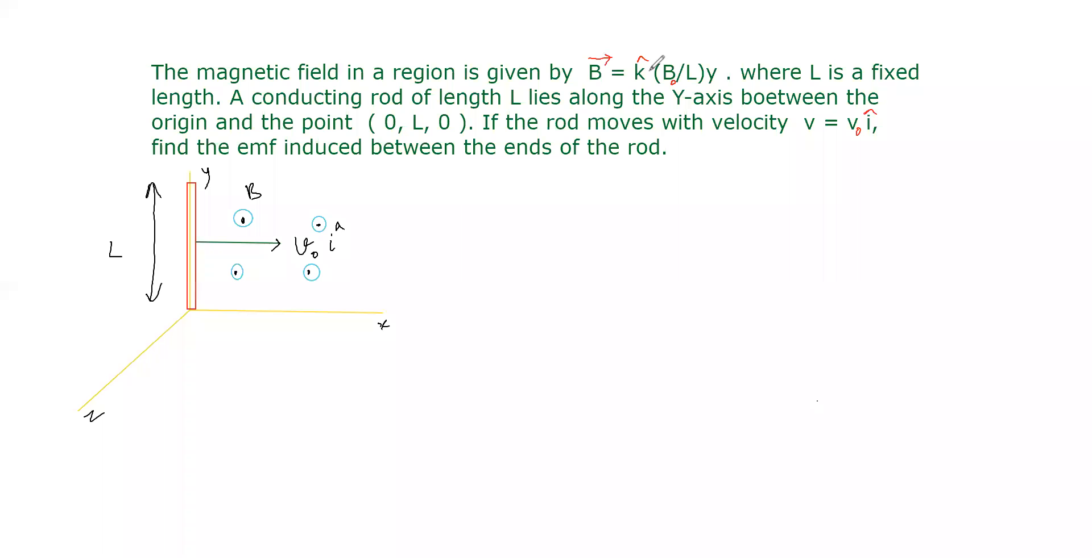Let us solve a problem in electromagnetic induction. The magnetic field in a region is given by B = B0L/y, where L is a fixed length. A conducting rod of length L lies along the y-axis between the origin and the point (0, L, 0). If the rod moves with velocity v = v0î, find the EMF induced between the ends of the rod.